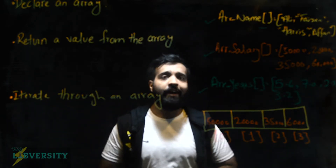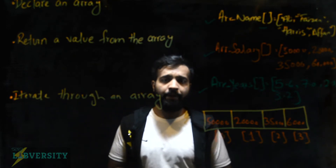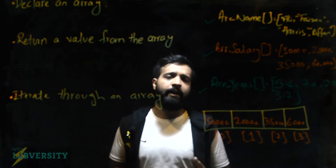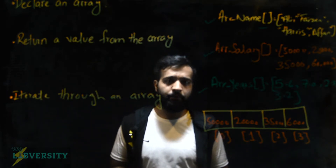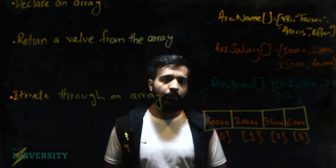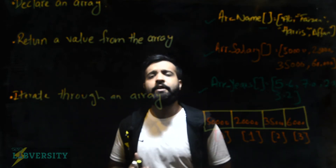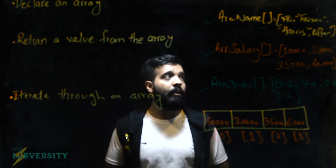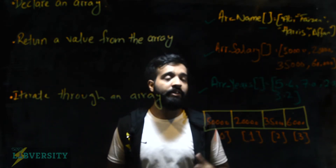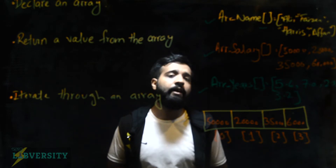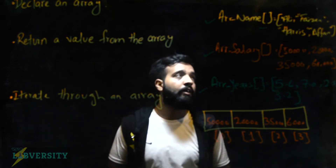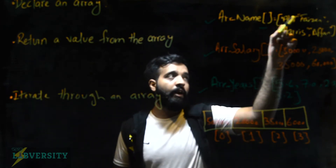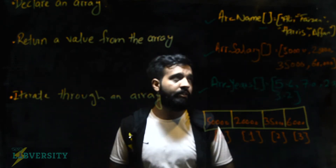So defining an array: an array is a data structure that holds similar types of data, or an array is a collection of items of the same data type. In the name array I have declared four names — a collection of names — and as we know names are alphanumeric, so this is the string data type, written in double quotes.